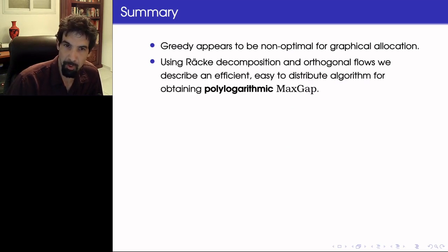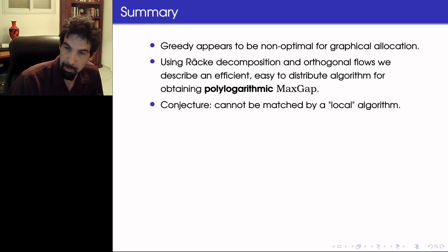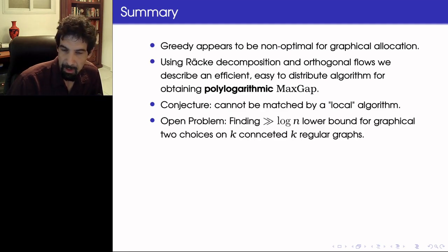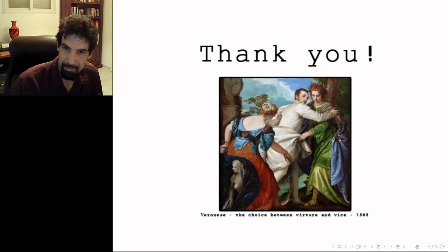So the greedy appears to be non-optimal for graphical allocation. And using Räcke decomposition and orthogonal flows, we were able to describe an efficient and easy to distribute algorithm for obtaining always polylogarithmic maximum gap. We conjecture that this cannot be matched by any local algorithm considering only the load on a vertex and its near vicinity. And it remains open to show any better lower bound than log N for graphical two choices on k-connected k-regular graphs. So for example, it would be interesting to see a log² N lower bound for any algorithm on the cycle. I thank you very much for listening to this presentation.